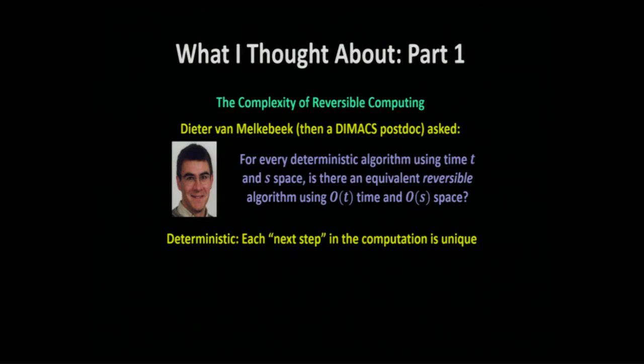To recall: deterministic means each next step in the computation is unique and well-defined. Reversible means that each previous step is also well-defined and unique — so any erasing of information can't be done unless you know exactly what was there and how to go back. Reversible computation is possibly stronger than determinism. This was a hard problem, and the question is still open — I didn't resolve it in my REU.